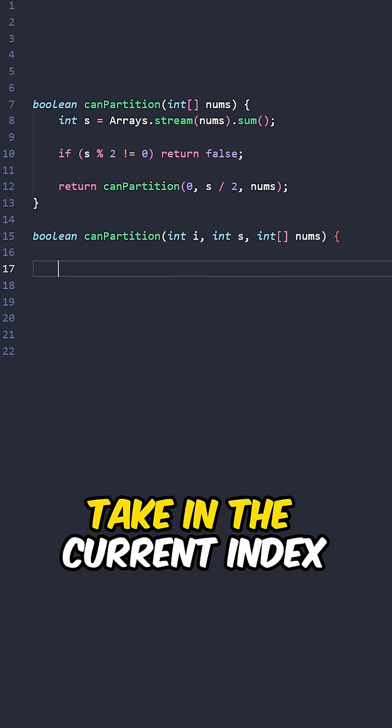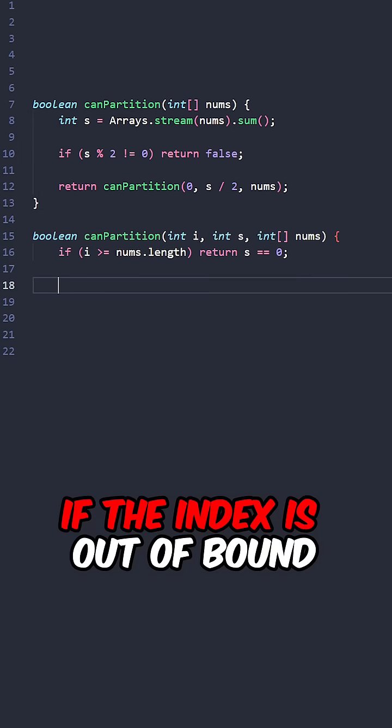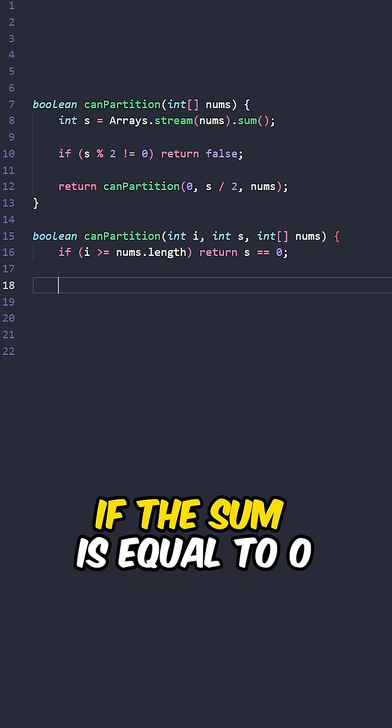Now let's implement the helper method taking the current index, the target sum, and the input array. If the index is out of bounds, return true if the sum is equal to zero.